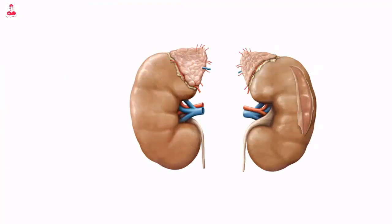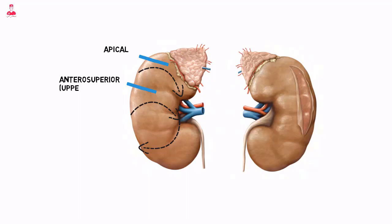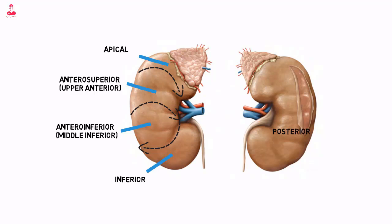The kidneys can be divided into five segments according to their vascular supply: apical, anterosuperior, upper anterior, anteroinferior, middle inferior, inferior, and posterior. The segmental classification helps with surgical planning for partial nephrectomies.